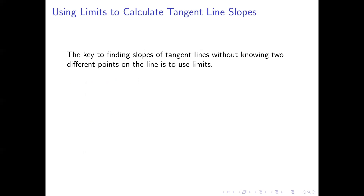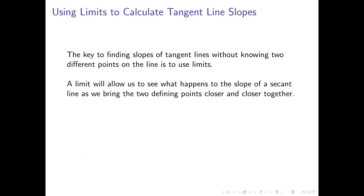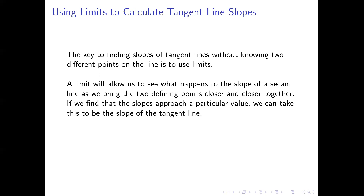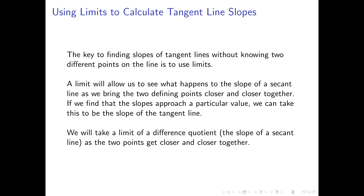Let's see how we can use limits to calculate tangent line slopes. Limits allow us to overcome the challenge of knowing only one point on the line. What limits allow us to do is start with a secant line — where we know two points — and bring one of the points closer and closer to the other until we can't tell them apart. In many cases, as we move one of the points, the slope of the secant line will get closer and closer to some particular number, and we can take that number to be the slope of the tangent line. The way to do this analytically is to take a limit of a difference quotient, since a difference quotient gives us the slope of a secant line, and the limit brings the points closer and closer together.